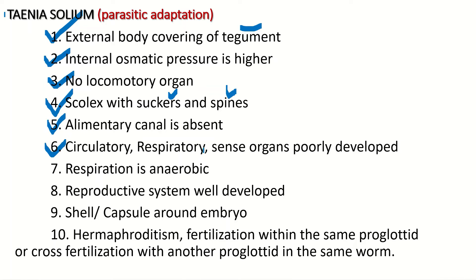Circulatory, respiratory, and sense organs are also poorly developed, as they are not needed for the survival of this organism. Respiration is anaerobic because free oxygen is not available in the host body, so anaerobic respiration takes place. However, the reproductive system is well developed in these organisms.